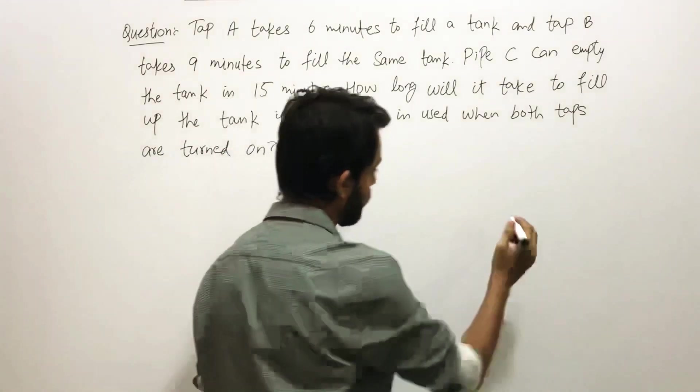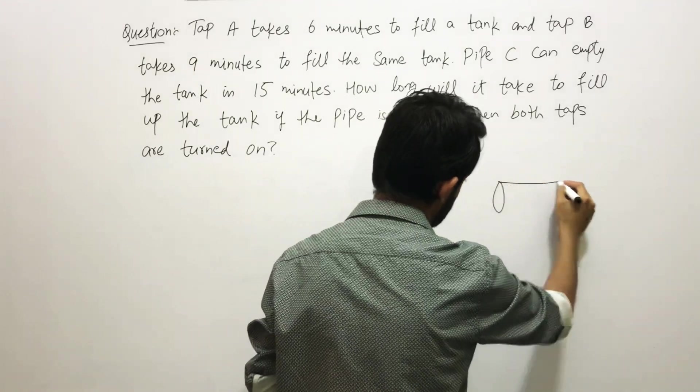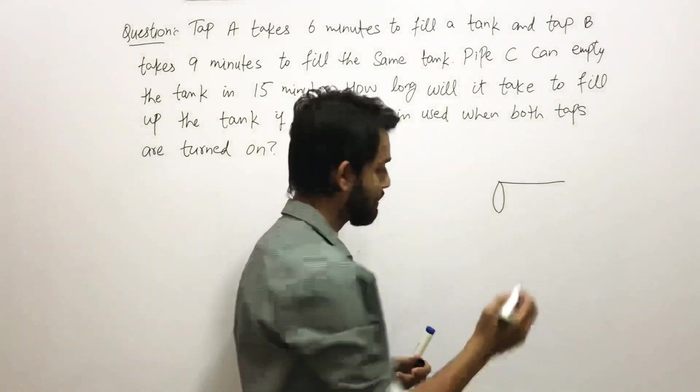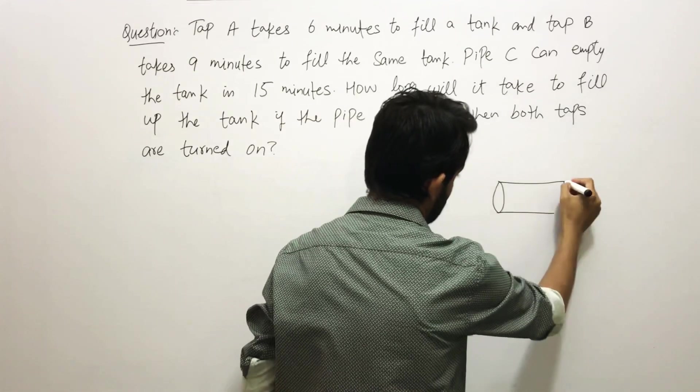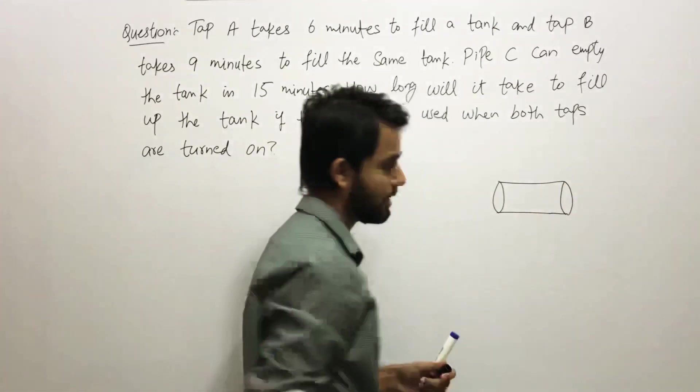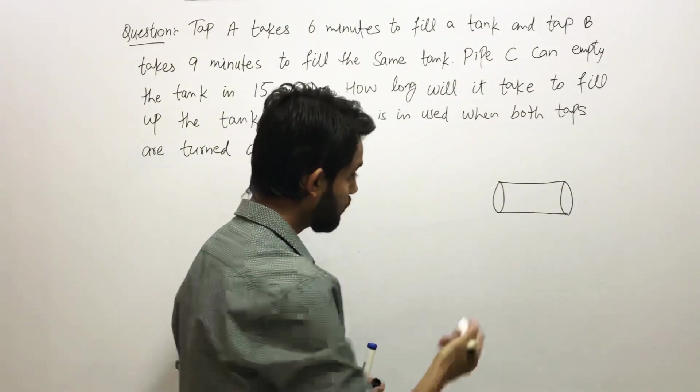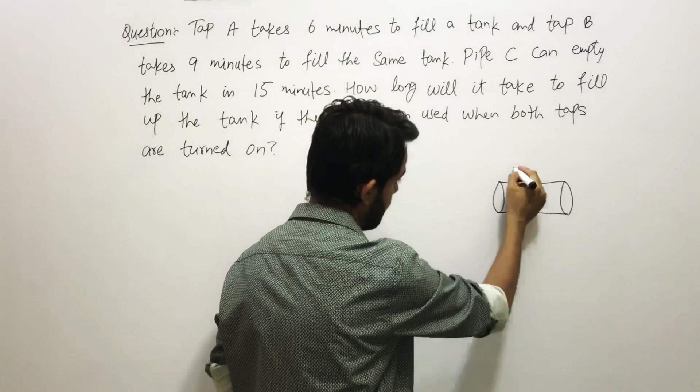While Tap B is also circular but has a very small diameter, that is why it takes more time for Tap B to fill up the whole thing. Let's make a tank over here in a cylindrical shape because I am good at making cylinders.